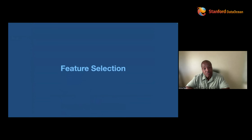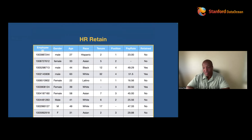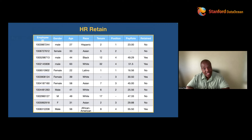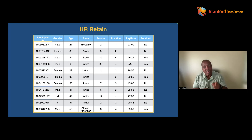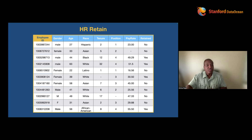The first thing you want to do for any dataset is feature selection. Knowing your domain, feature selection asks: what can I get rid of? That's hard for people. If you have a data analytics background, you want to keep everything — there could be some correlations I'm missing. But that's not data science or machine learning. Say less. Don't ever tell the machine more than it needs to know. Don't tell it less, but don't tell it more.